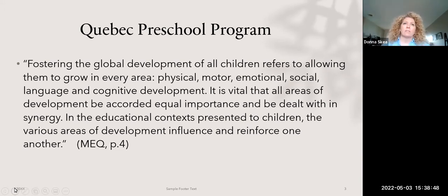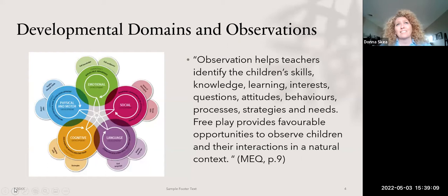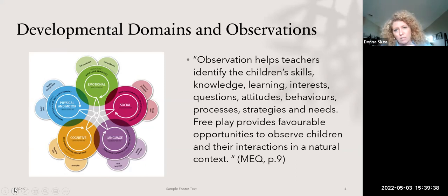Looking at developmental domains, it's important to see the global picture of the child: emotional development, social skills, how they enter into play, the language they use, their cognitive skills and executive functions, and how they move their body in fine and gross motor activities. Through skilled observation — and only through skilled observation — can we really identify what a child is capable of doing.